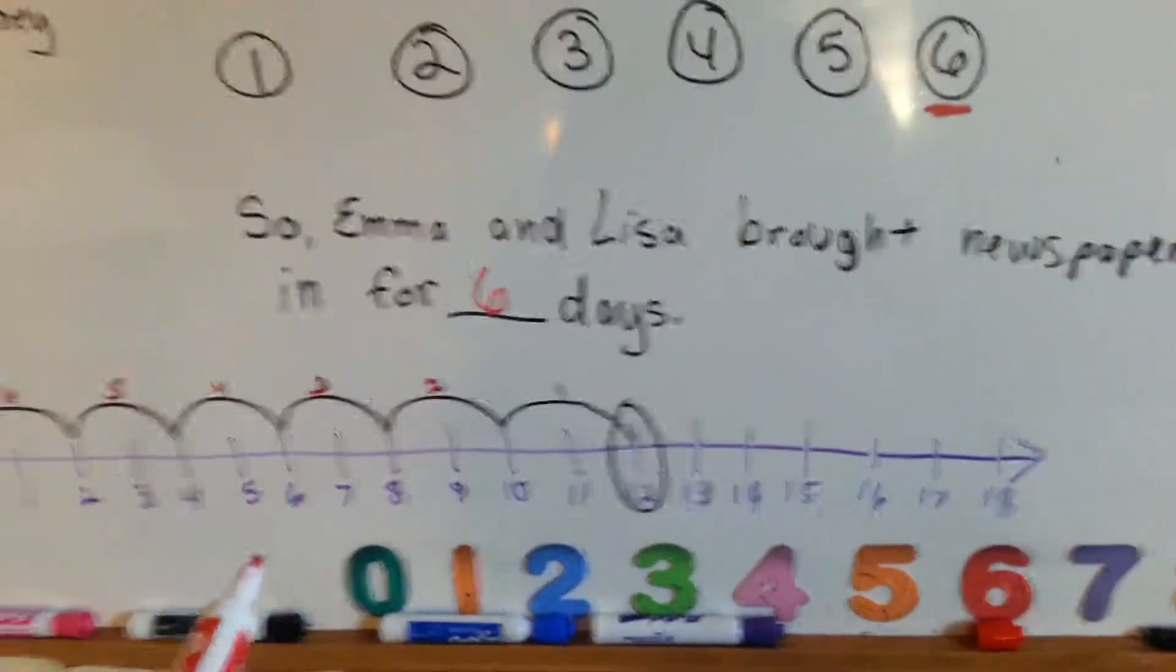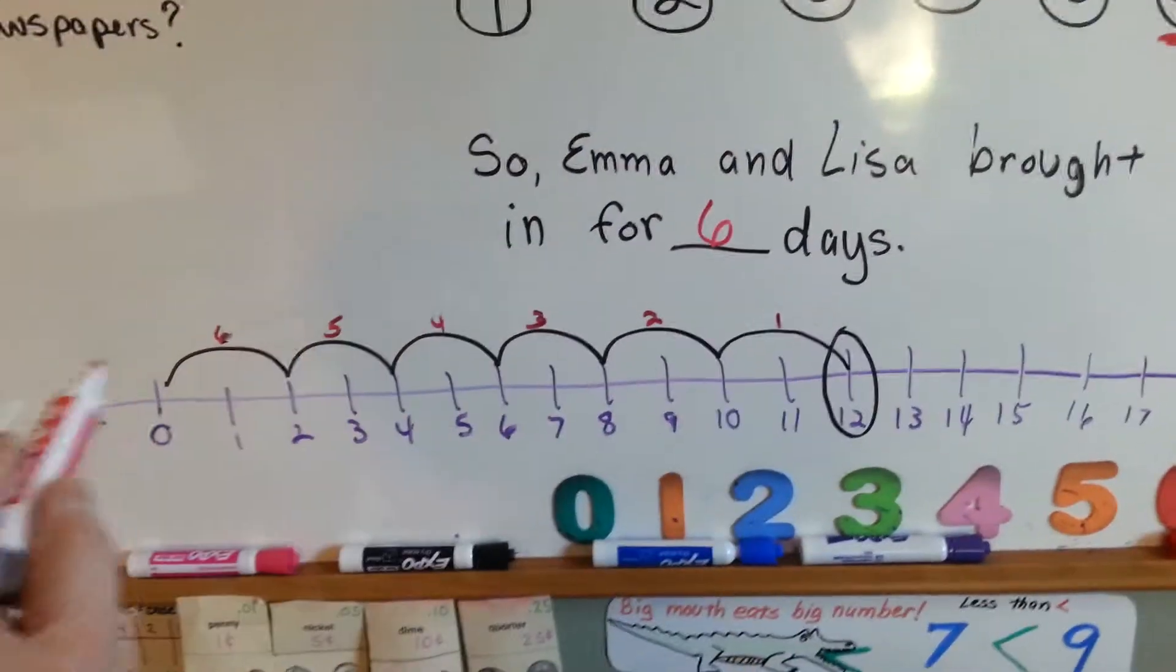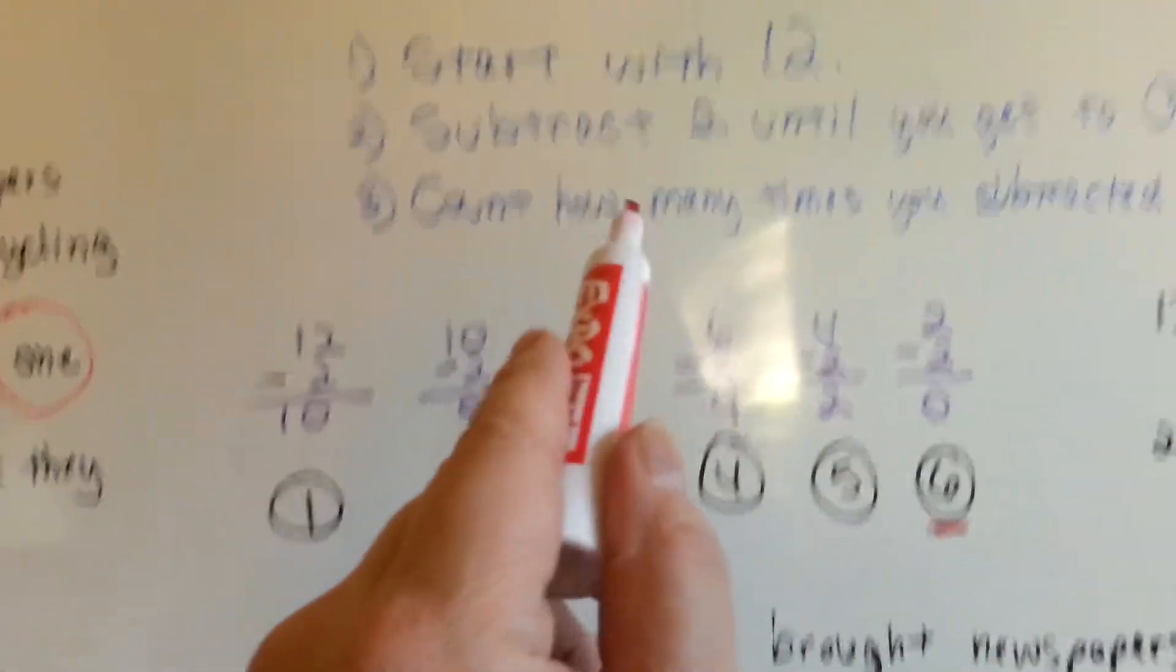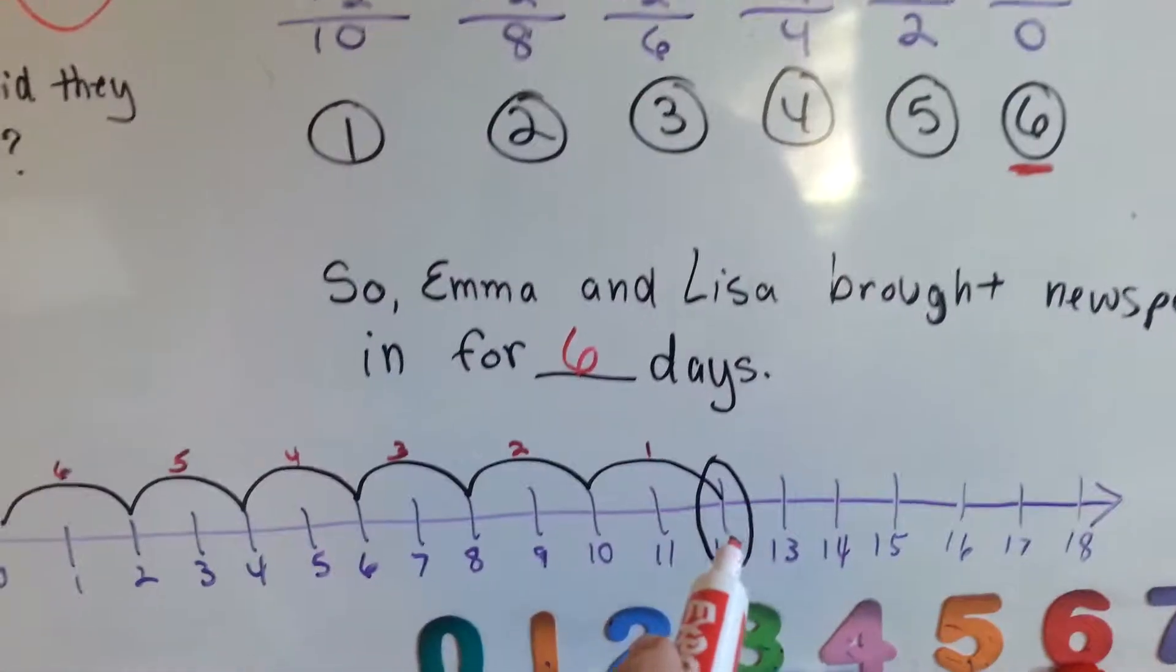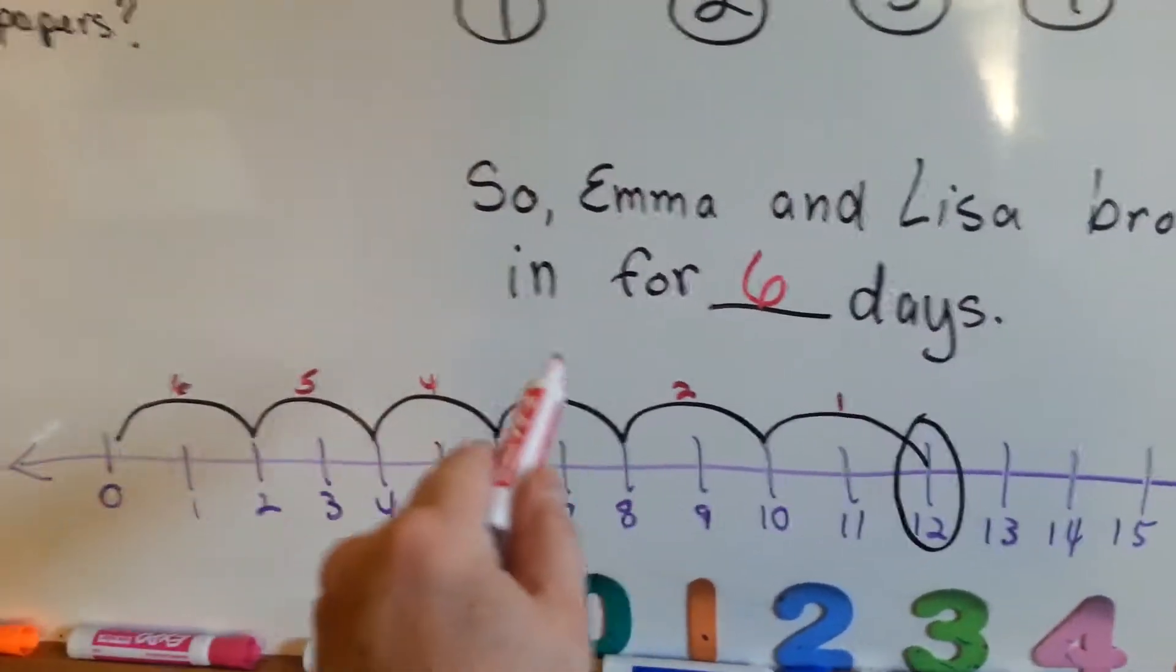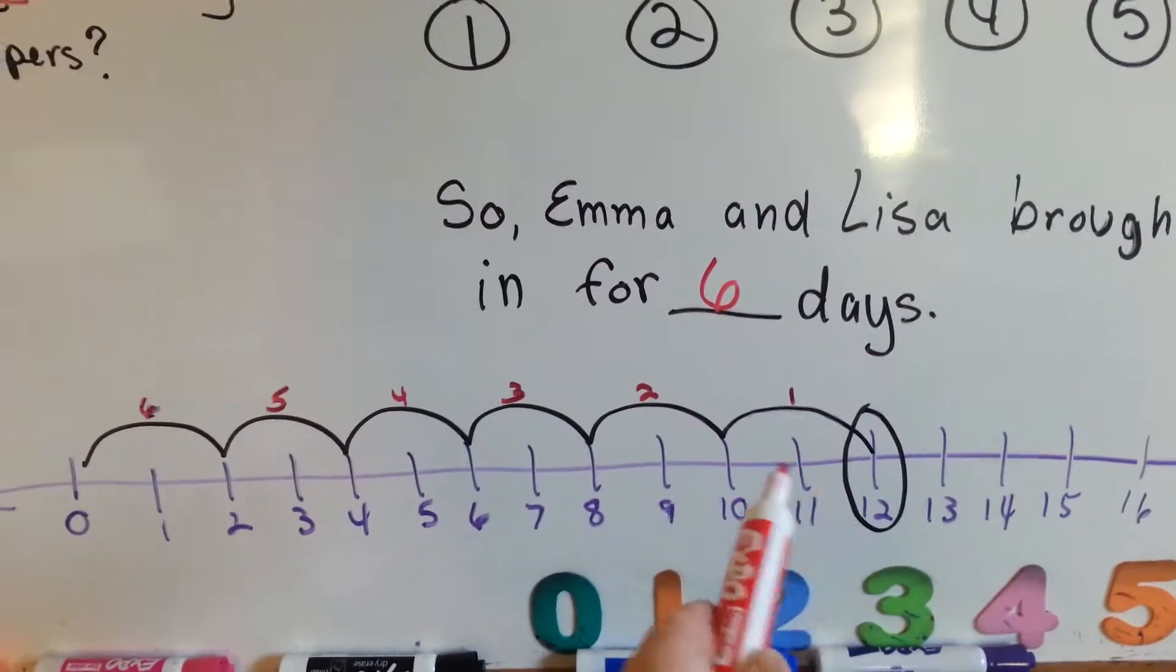Now, there's a way of doing this on a number line. Get a number line, make it from zero to a number higher than the number you need to start with, the twelve, and count back by twos. One, two, three, four, five, six twos.